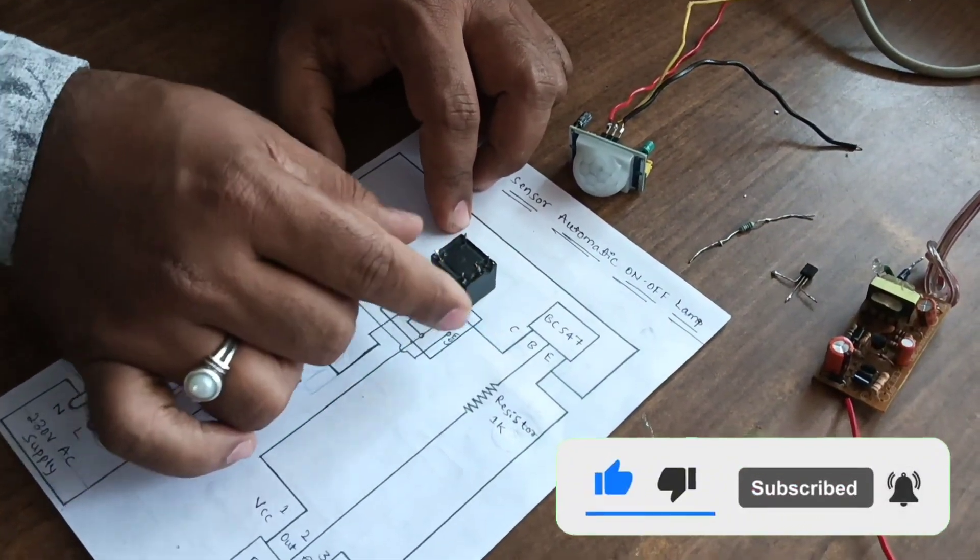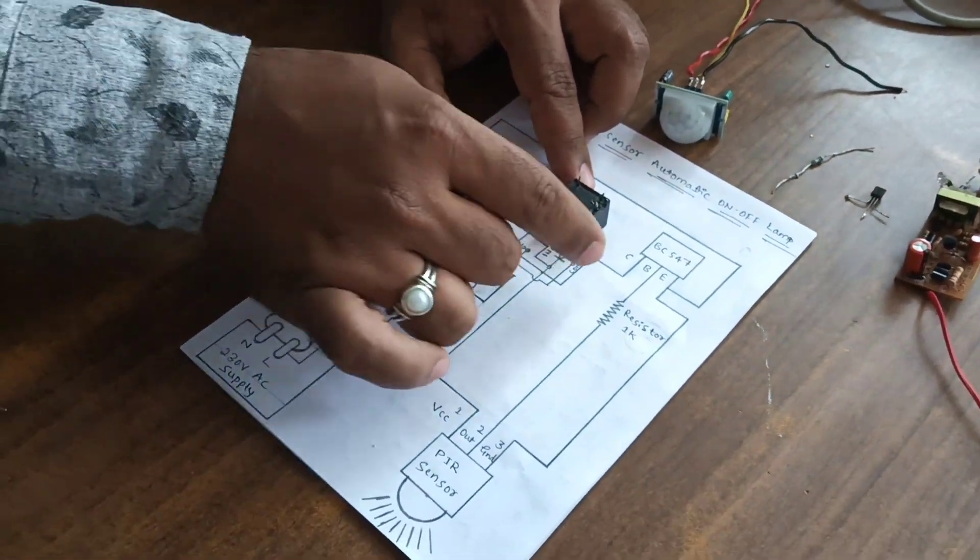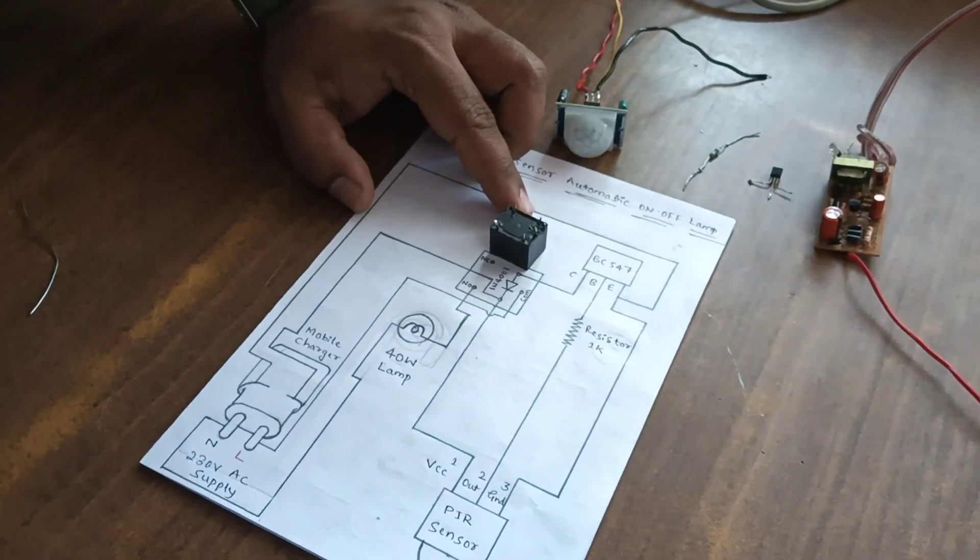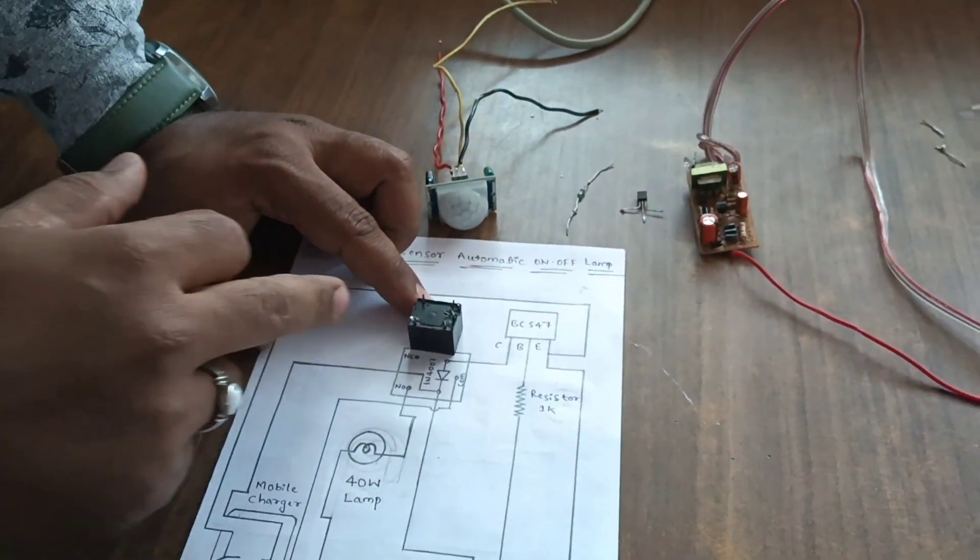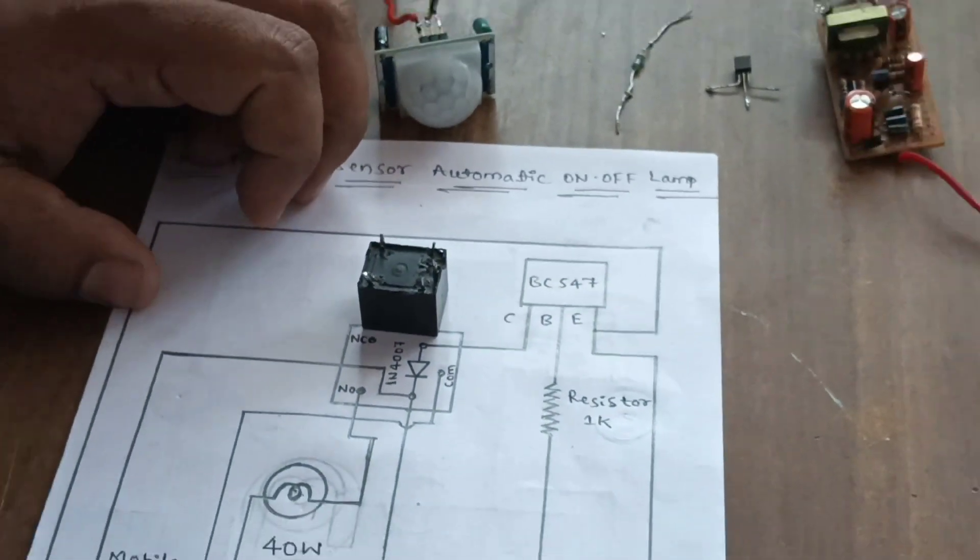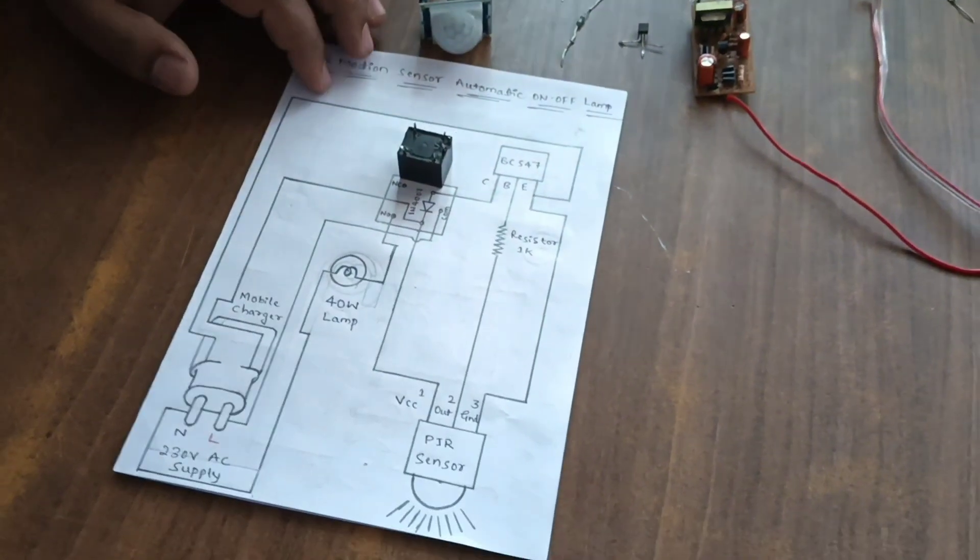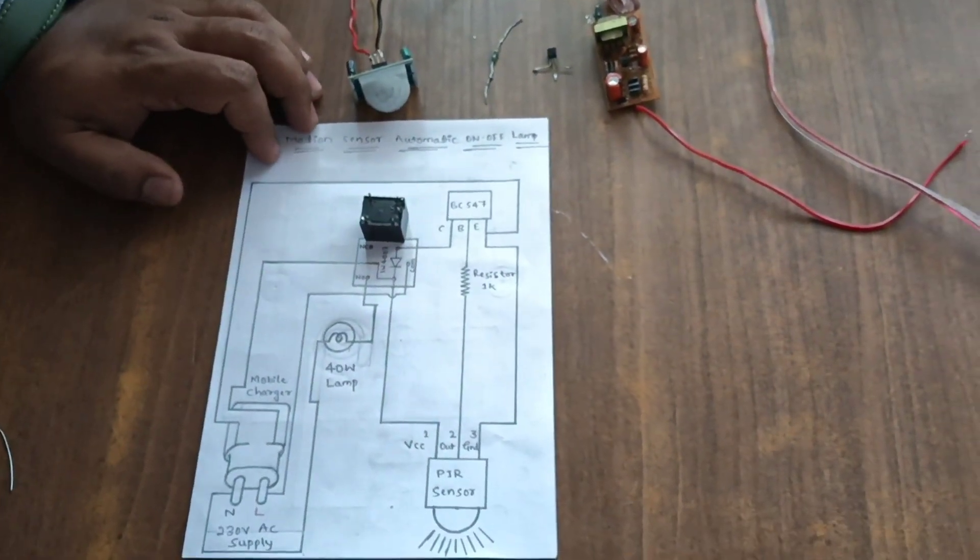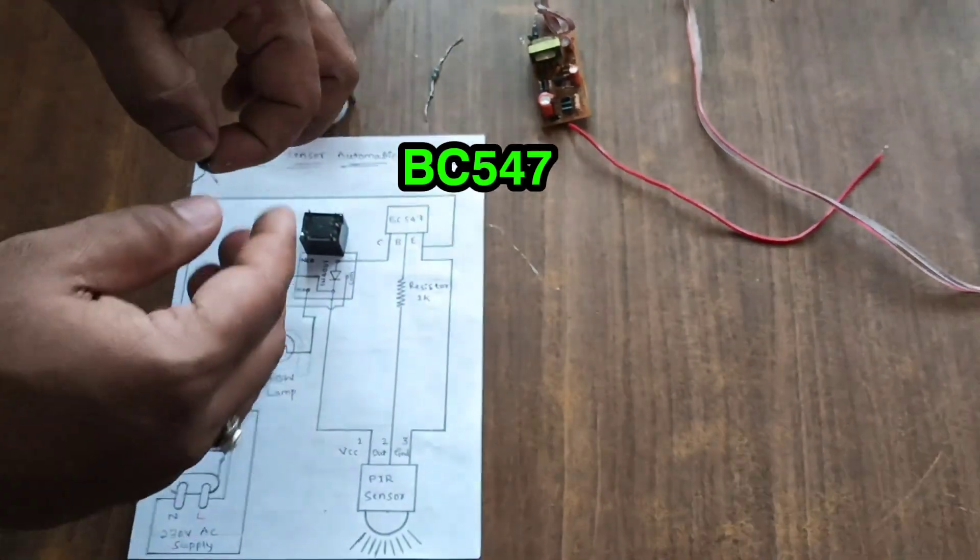This is the relay. In earlier videos in this channel, we shown how the relays operate and what are the terminals of the relay and how to check it. Next, we used BC547 transistor.